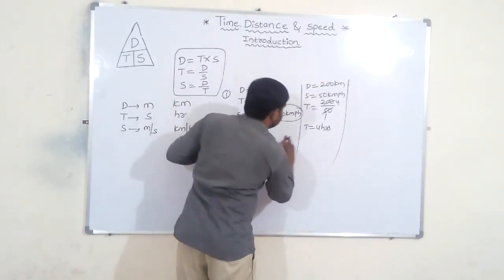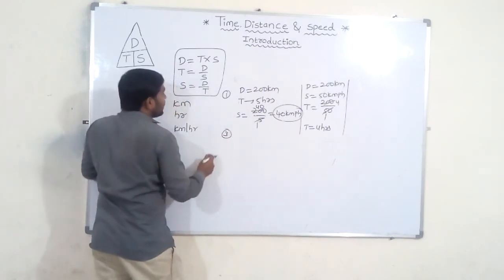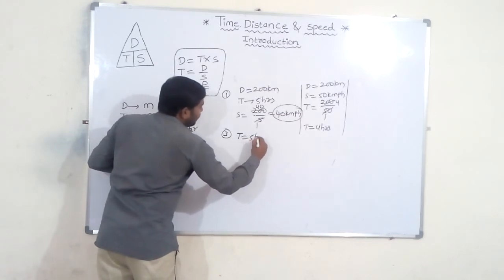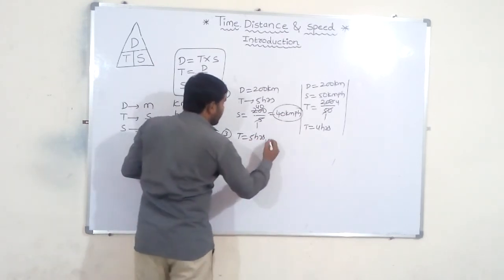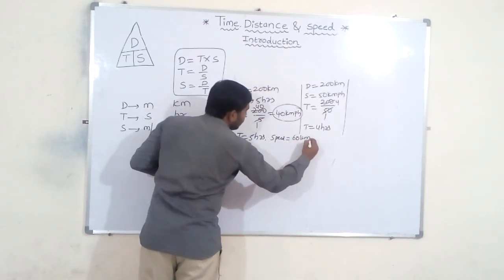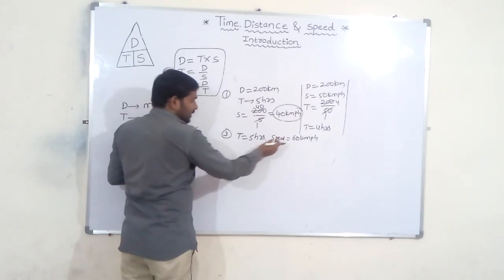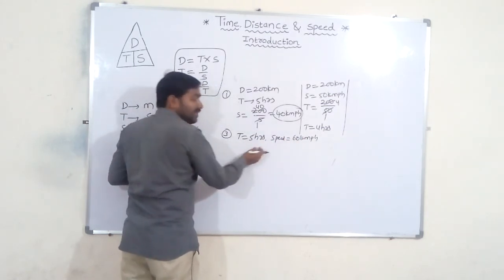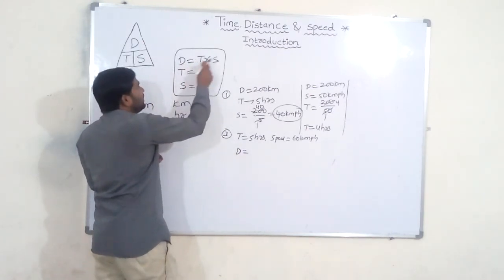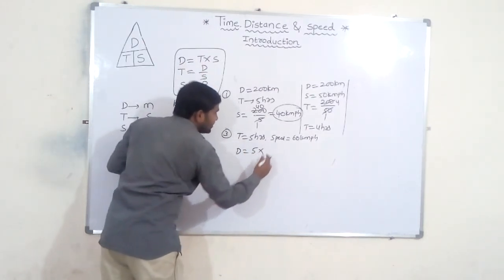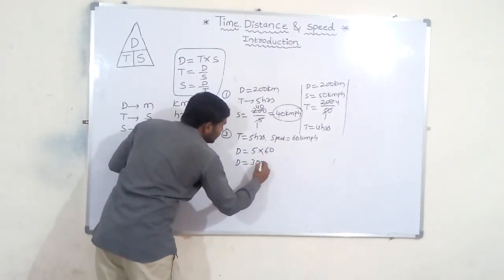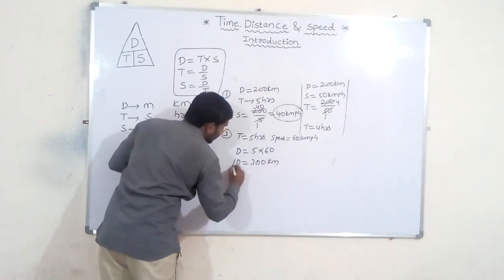Third problem: speed is 60 km per hour, time is 5 hours — find the distance. Distance equals time into speed, so 5 hours into 60 km per hour equals 300 km. The distance covered is 300 kilometers. Thank you, friends.